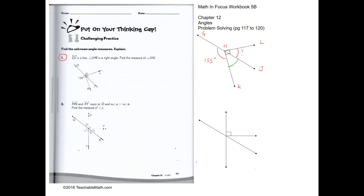Angle KHJ is 180 minus 155, because the angle is on a straight line. So this is equal to 25 degrees.